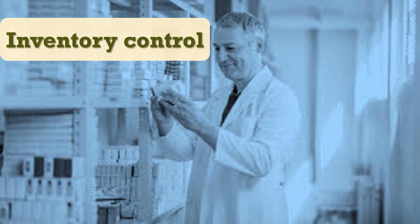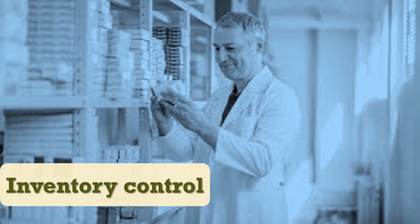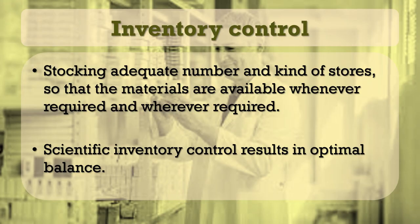The name itself suggests its advantages. If a hospital pharmacy has too little inventory, it will affect manufacturing efficiency and there is always a danger of going out of stock. In contrast, if a hospital pharmacy has very high inventory, it will affect the overall budget of the hospital. Therefore, it is mandatory to have optimum inventory. Inventory control is nothing but stocking an adequate number and kind of stores so that materials are available whenever and wherever required. Scientific inventory control results in optimal balance. It can also be explained as the sum of value of raw materials and other materials in the stock of an organization at any given time point.